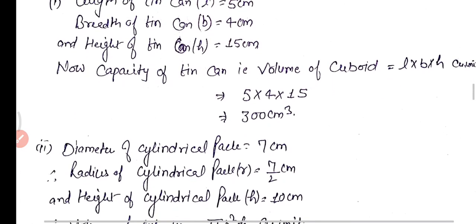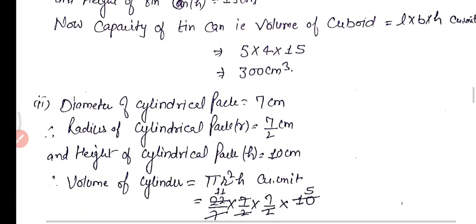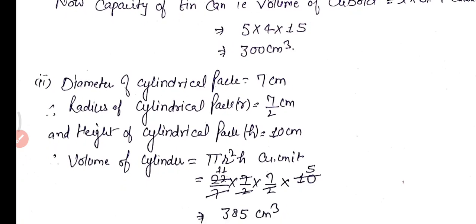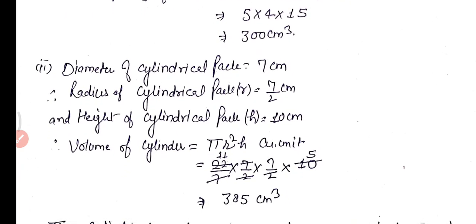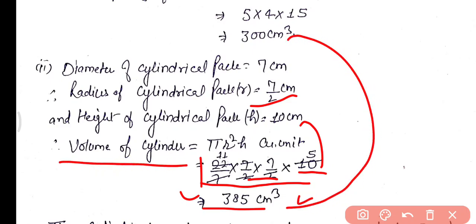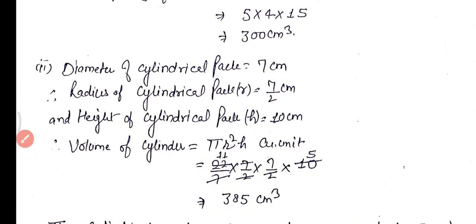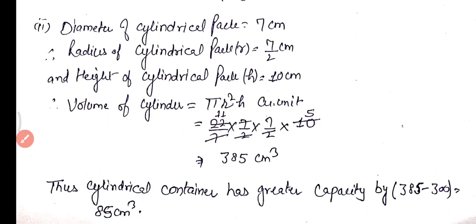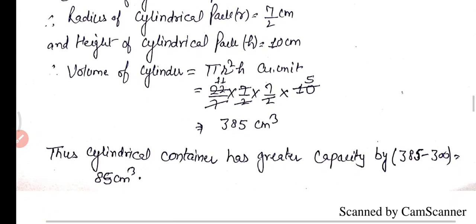For the cylindrical pack: diameter = 7 cm, so radius = 7/2 cm, and height = 10 cm. Volume of cylindrical pack = πr²h = (22/7) × (7/2) × (7/2) × 10 = 385 cm³. The difference is 385 − 300 = 85 cm³. Therefore the cylindrical container has greater capacity by 85 cm³.